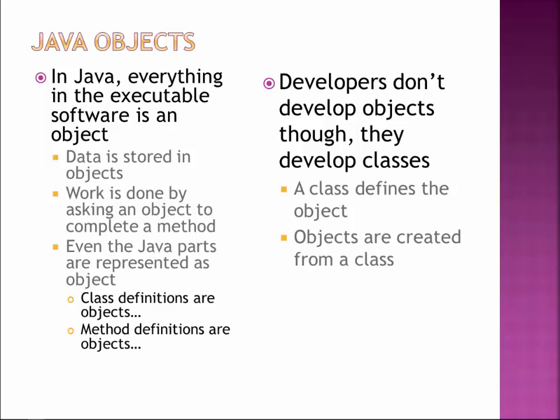That being said, as a developer, you will never ever build an object yourself — you are one level removed. You build the class, which then builds the object. So when we say object-oriented programming, as a developer, it's really class-oriented programming. I build the classes and it goes from there. The important thing to remember is the difference between an object and a class: an object is the thing that does the work, and the class is the definition of the work.